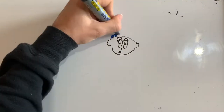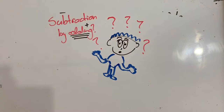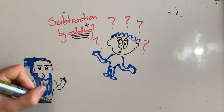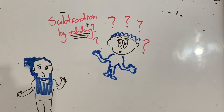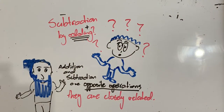And you might be thinking, hold on, how do we subtract by adding? Well, you may remember that addition and subtraction are opposite operations. That means that they're very closely related, and that we could actually find the answer to a subtraction problem by adding.